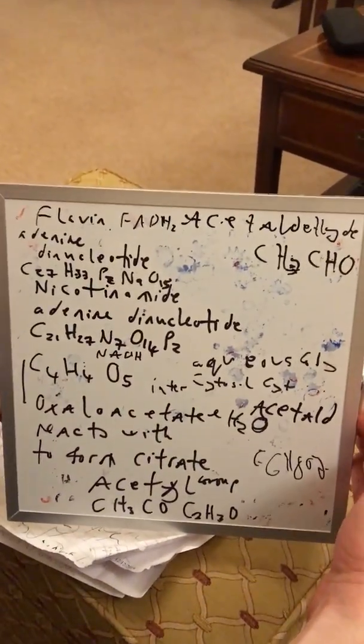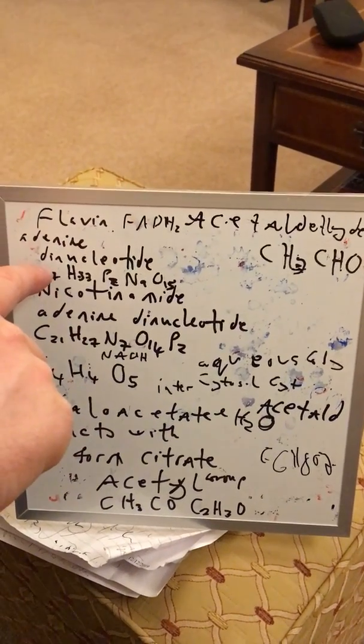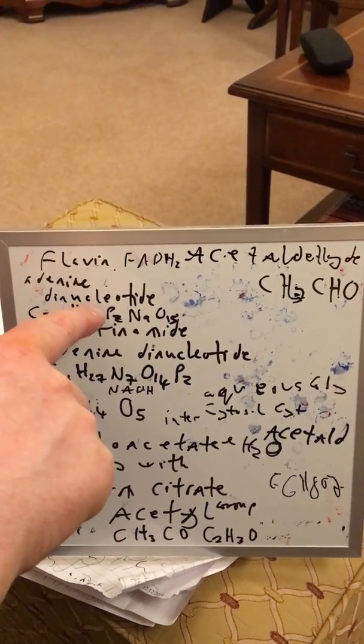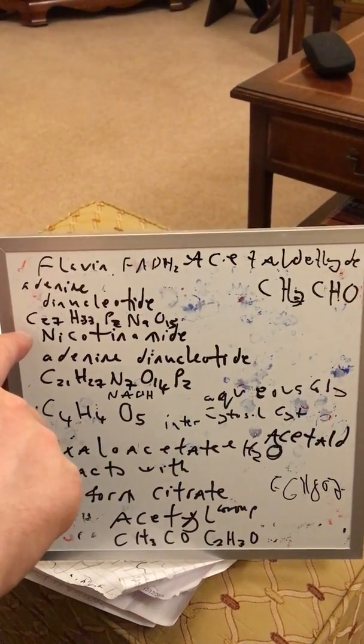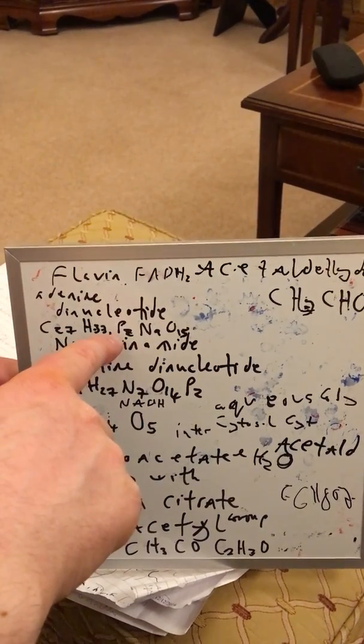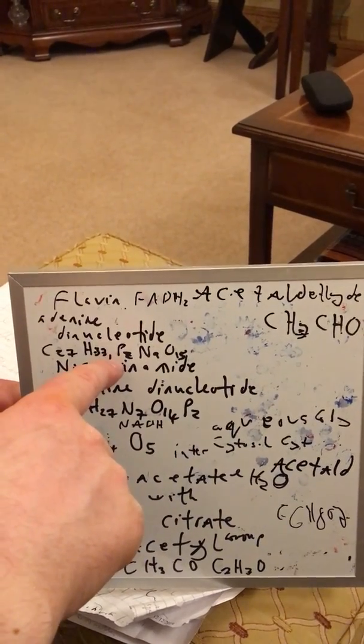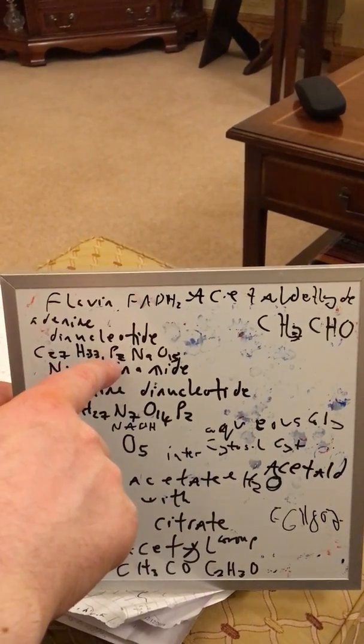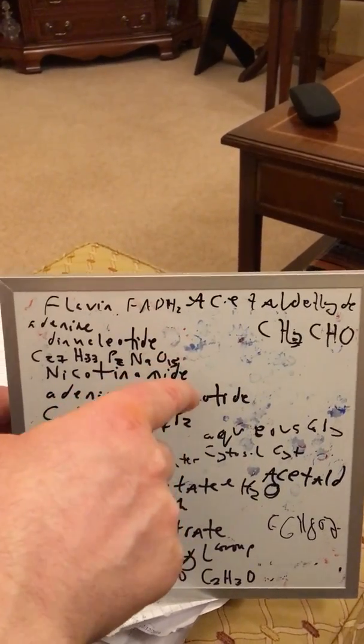If I just show you that. Now, here I've got flavin adenine dinucleotide, D-I-N-U-C-L-E-O-T-I-D-E. And if I give you the chemical formula, C27-H33, now that's phosphorus. So that element is phosphorus. So it's two atoms of phosphorus and nine of nitrogen, 15 of oxygen.